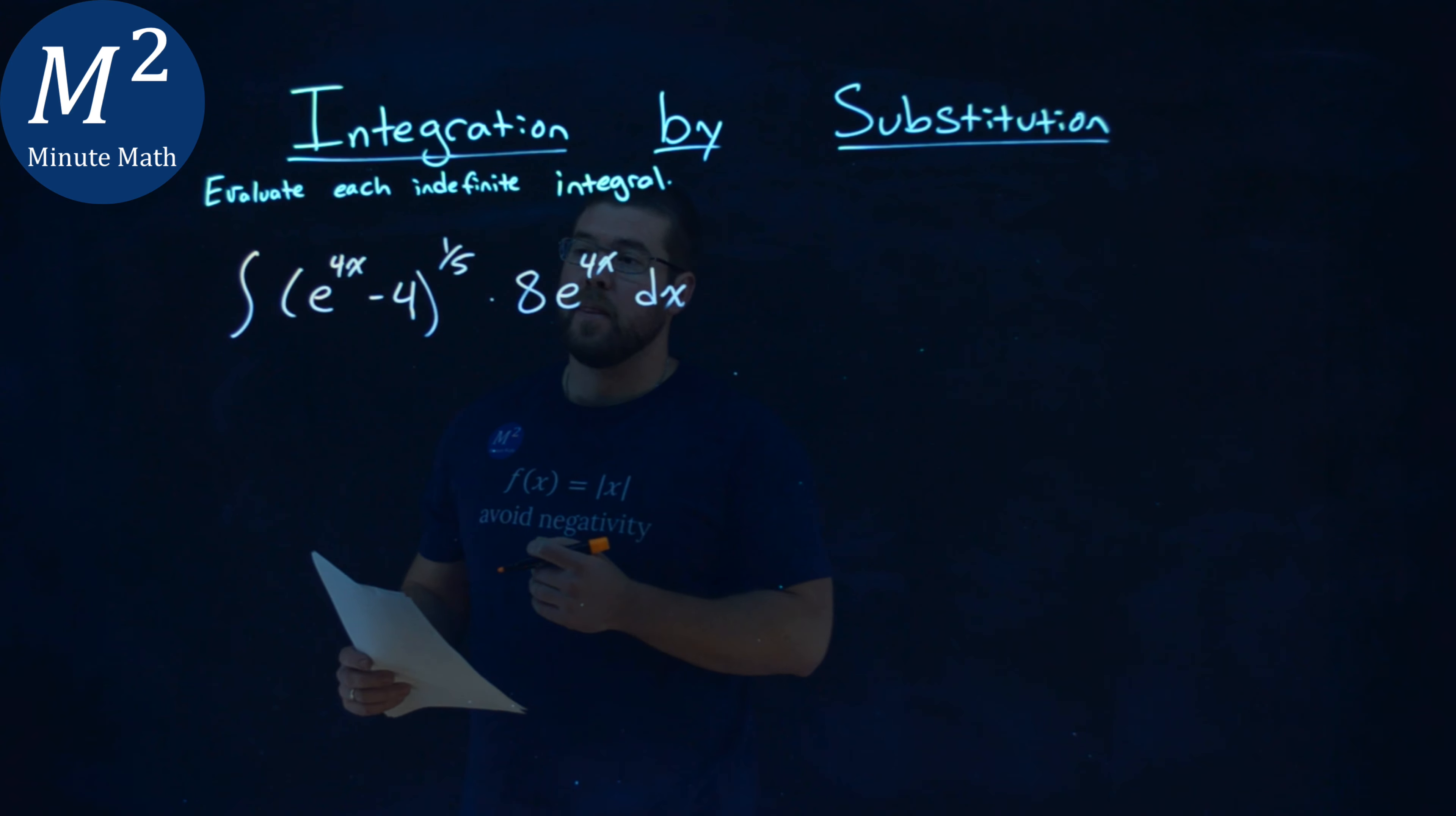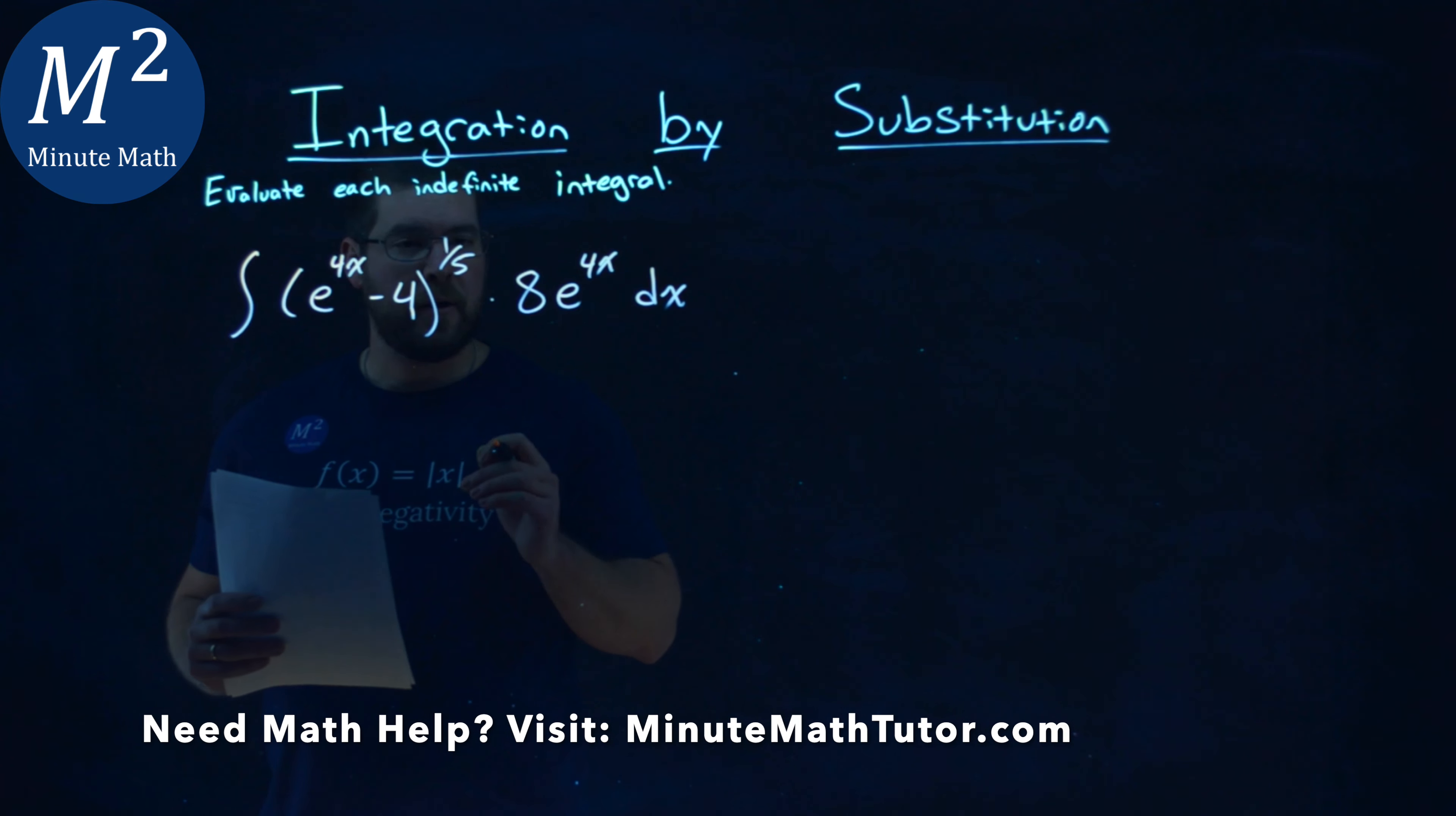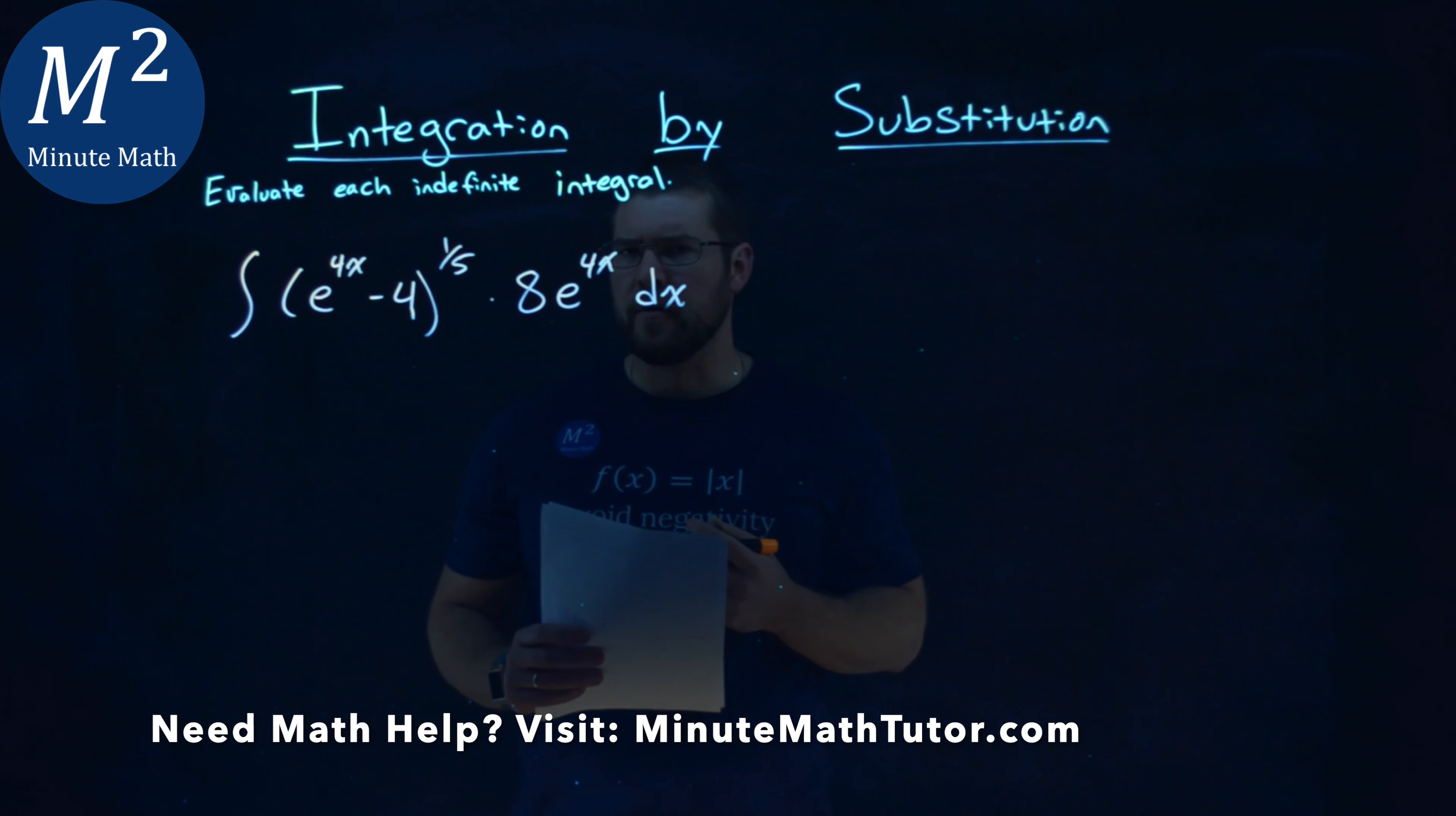We're given this problem right here, the integral of e to the 4x minus 4 all to the 1/5th power times 8e to the 4x dx, and we have to evaluate this indefinite integral.